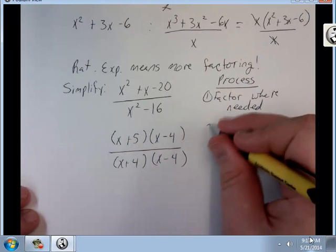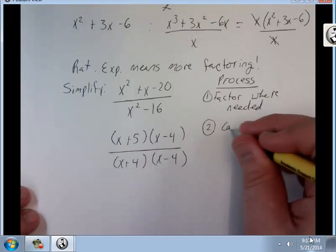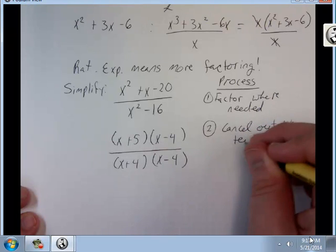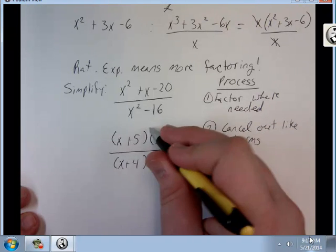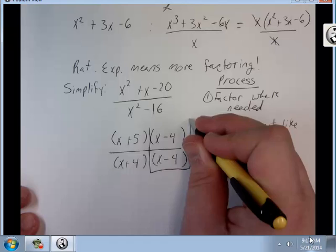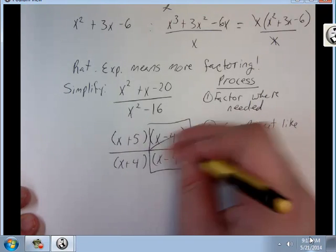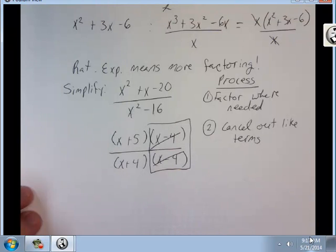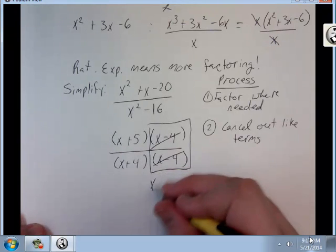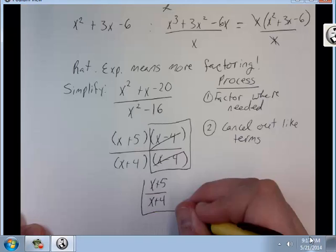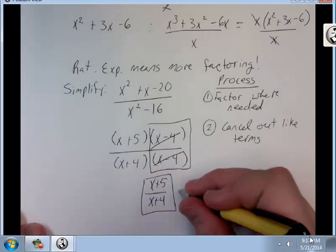Then cancel out like terms. Those two are the exact same so I can cancel them both out. I'm left with x plus 5 over x plus 4, and that's my answer. All there is to these.